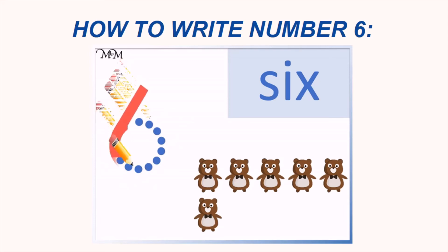And then we will make a circle. Number 6. This is the way we write number 6. A slanting line and then a circle.